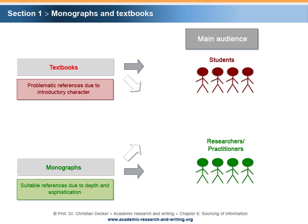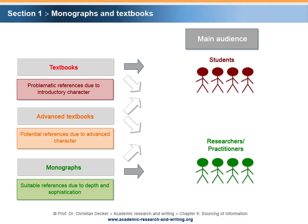For students, distinguishing between monographs and textbooks can be a challenge. If a book contains questions, problems and exercises, this could indicate that it is a textbook. Due to their audience and their mostly introductory character, textbooks are typically not considered suitable as references in a research project. However, some advanced textbooks are considered as generally accepted reference sources and may be deemed to be credible and citable references in their discipline.